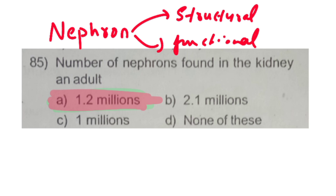This is how you can learn the number of nephrons. The nephron is the structural and functional unit of the kidney. The number of nephrons is 1.2 million.